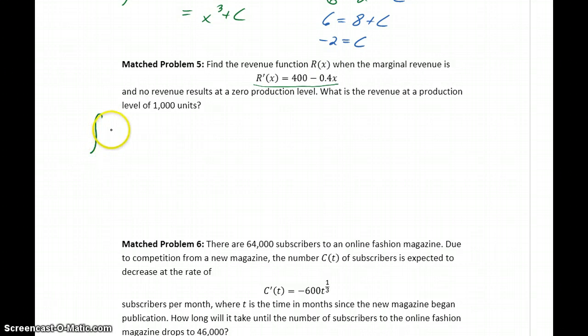So to start things off, we'll find the integral of our marginal revenue function, which will be 400x minus 0.4 times x squared over 2 plus some constant c, or 400x minus 0.2 x squared plus some constant c.